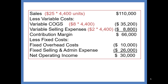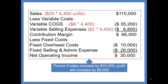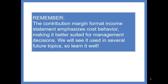This Part 2 simply proves that if sales increase by $10,000, profit will increase by $6,000 — you get the same result whether you use the Contribution Margin Ratio or recalculate the Income Statement. We'll be using the Contribution Margin format Income Statement throughout the rest of the semester, and we'll need to understand how to use the Contribution Margin and the Contribution Margin Ratio, so learn it well.